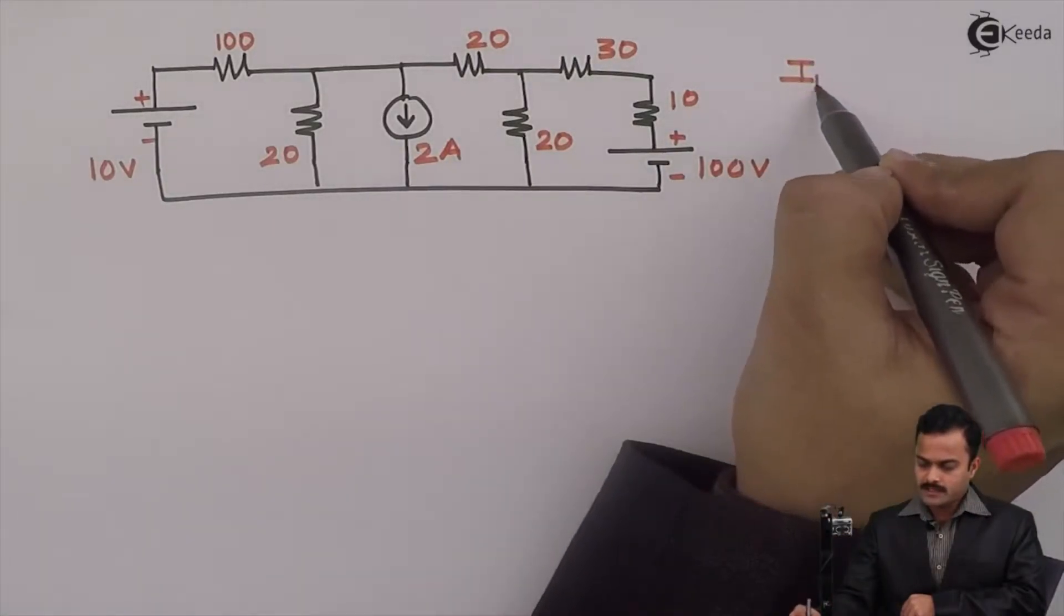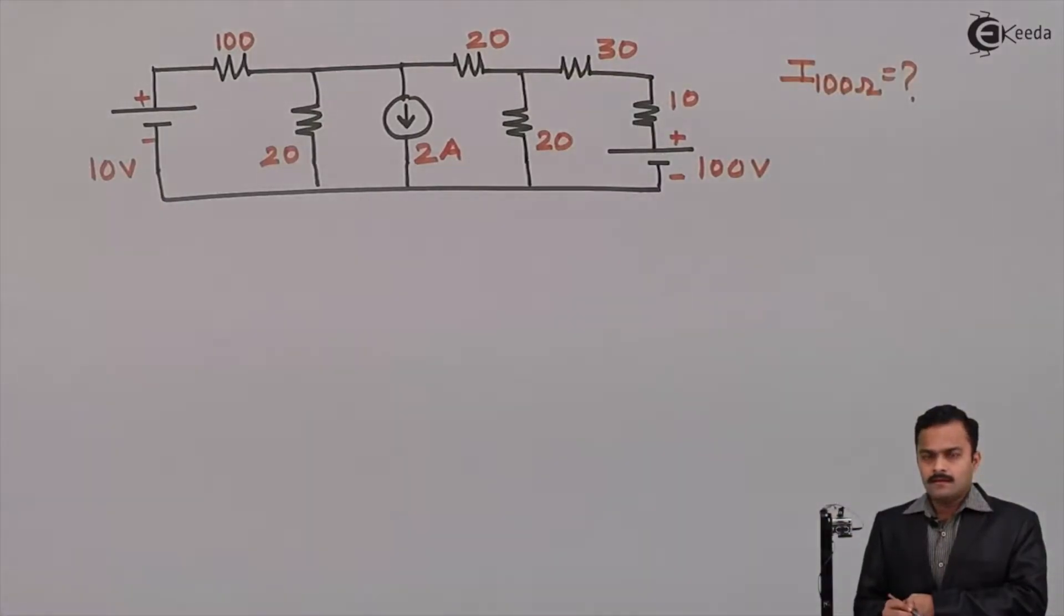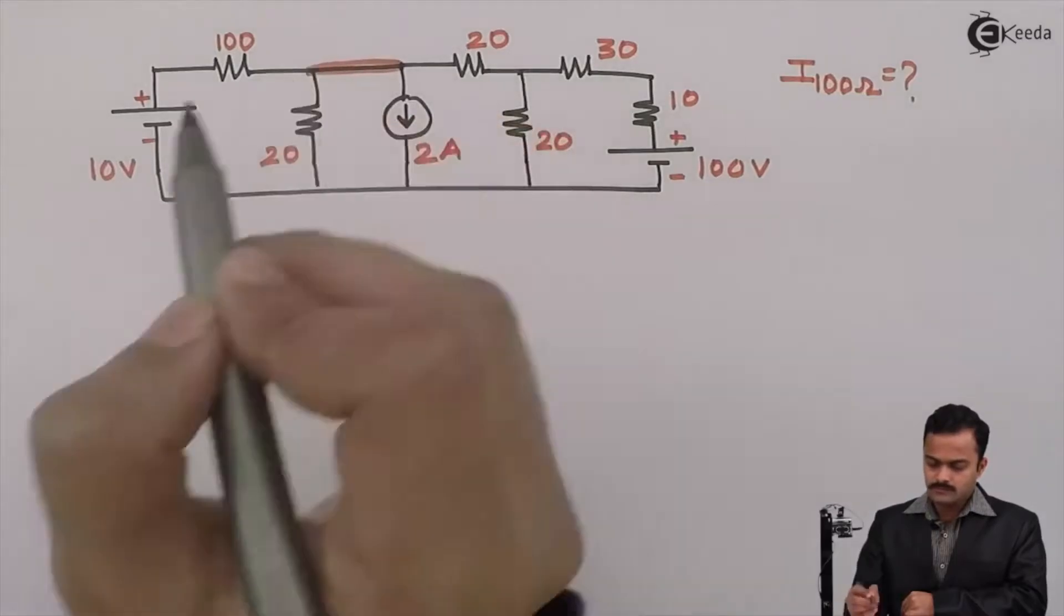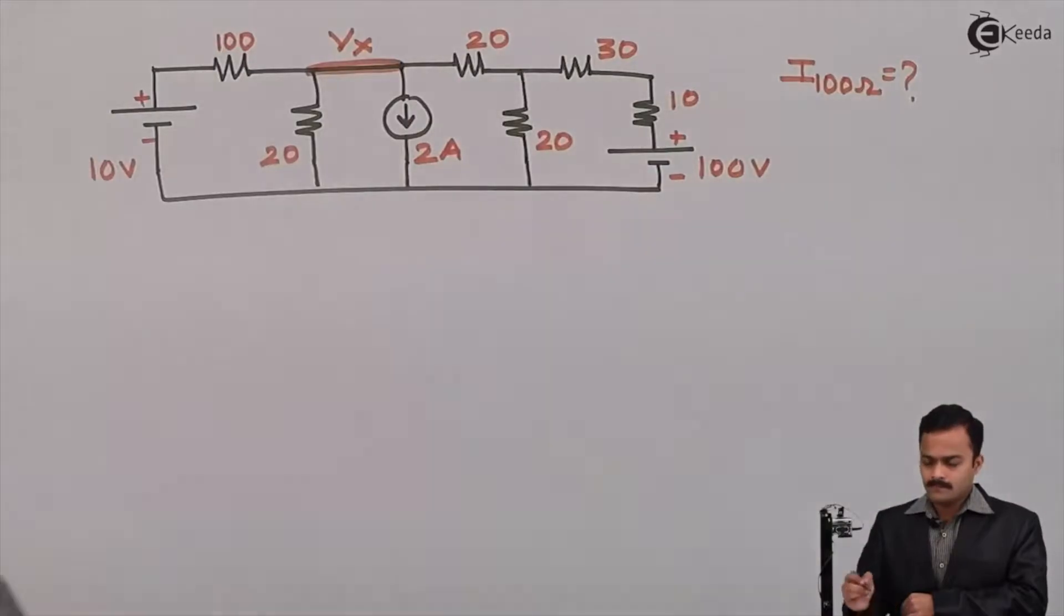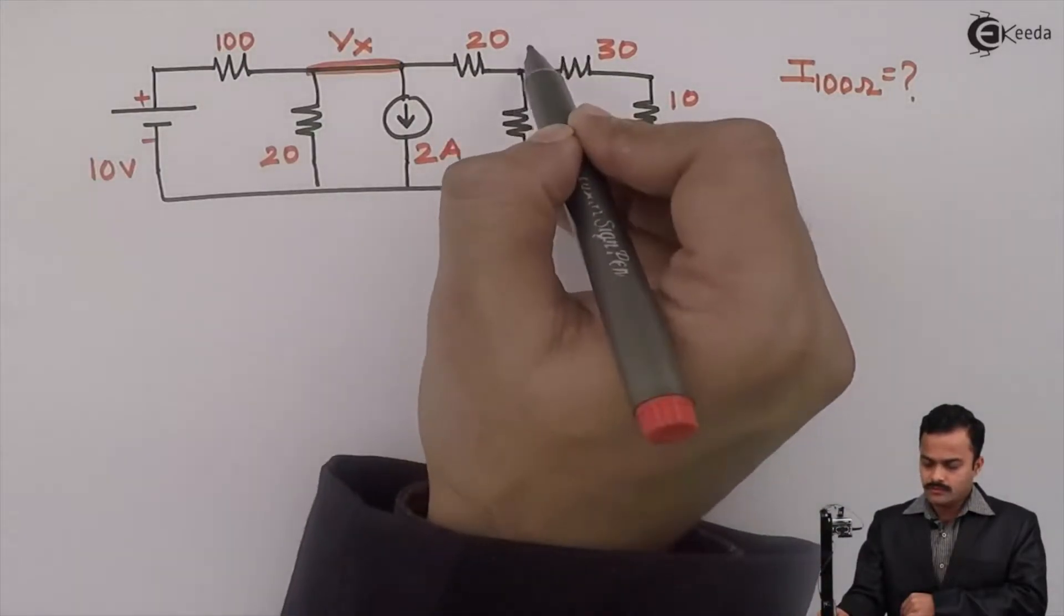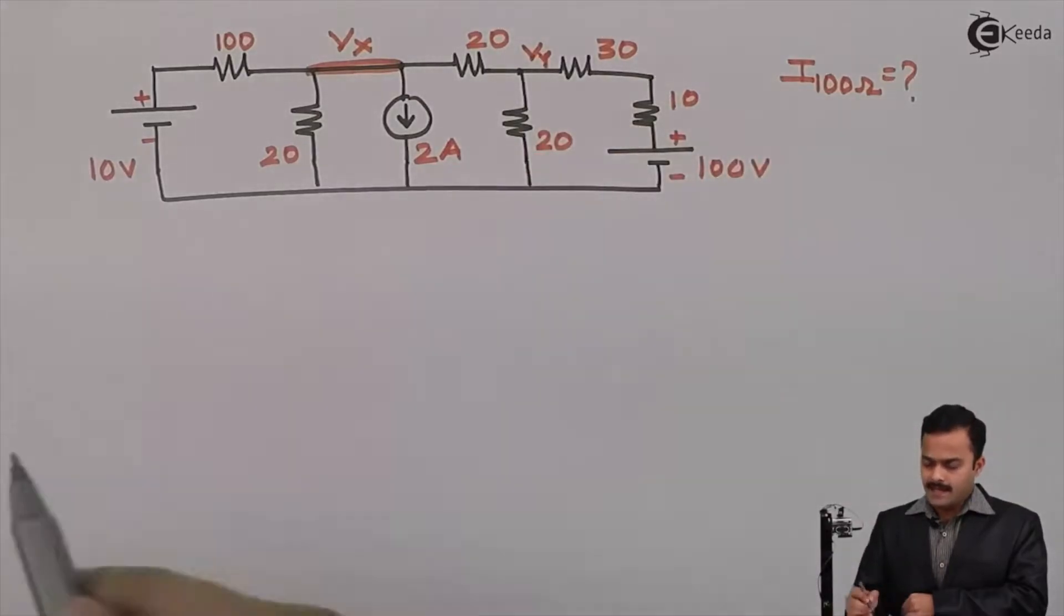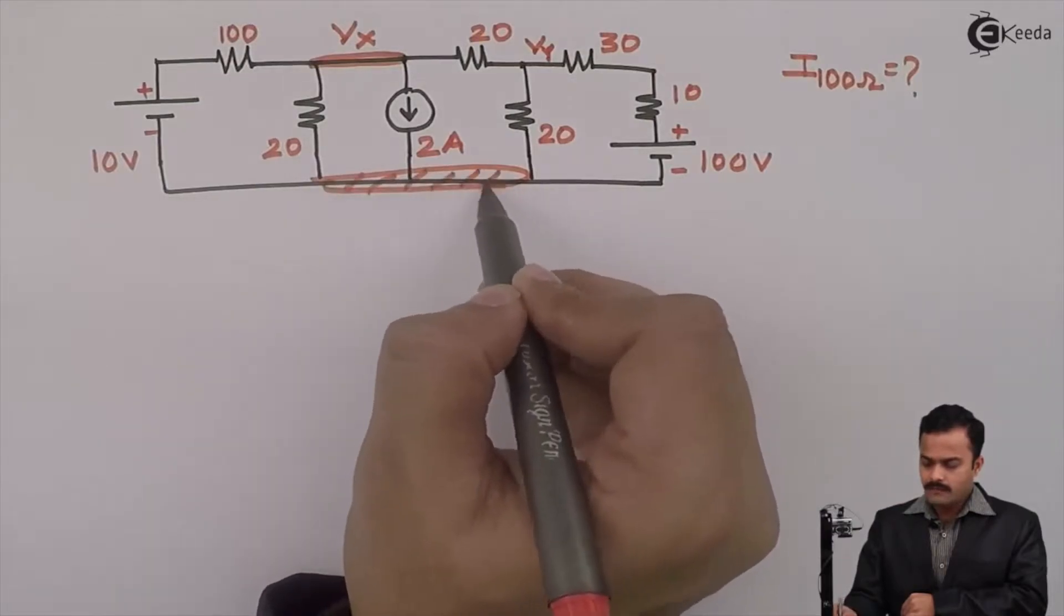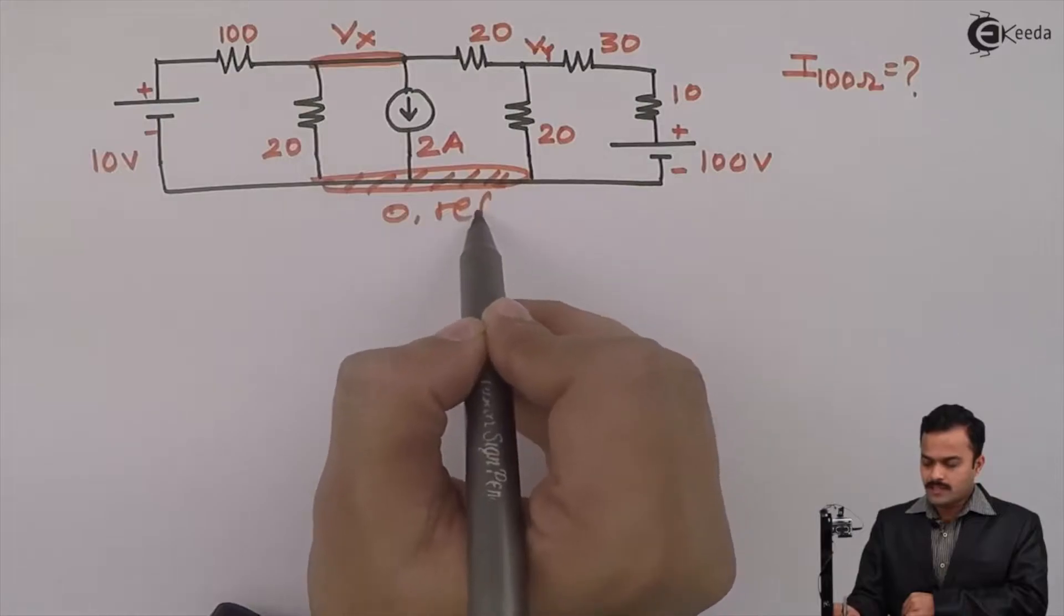Objective is to get current flowing through 100 ohm resistance. Let's mark nodes in this circuit. This is node 1, I can say potential of this node Vx. This is second node, let's take potential Vy. And this entire thing is one node. I will consider this as a reference having the voltage 0.